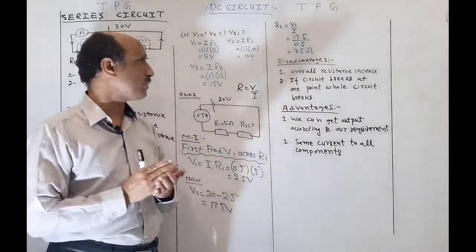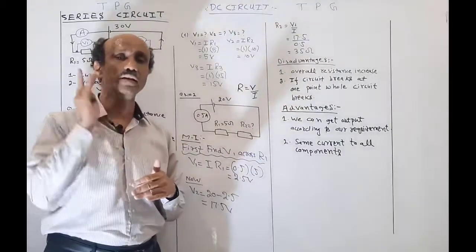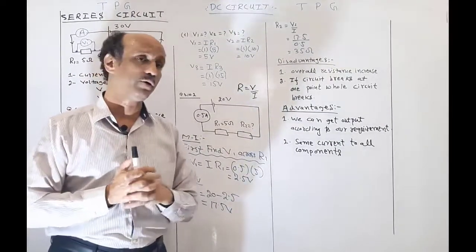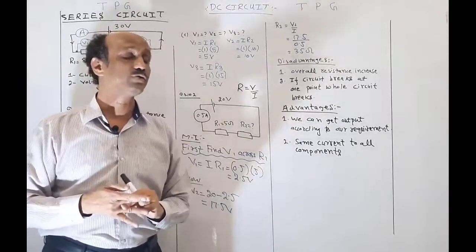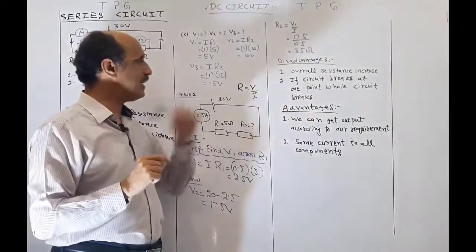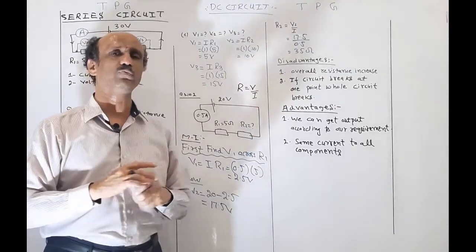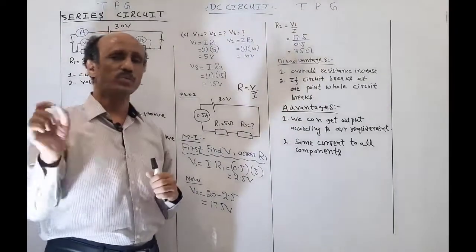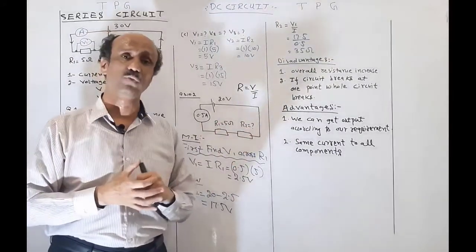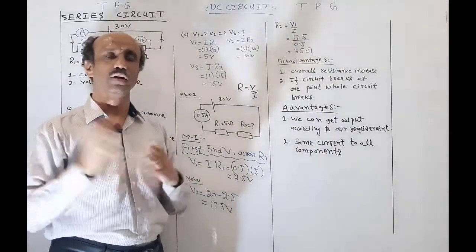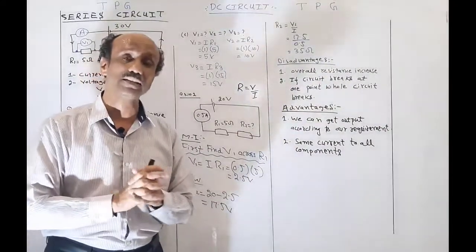The disadvantages of series combination: overall resistance increases, so current decreases. Also, if the circuit breaks at any one point, the whole circuit stops working because there is only one path for current flow. The advantage is that it acts as a voltage divider — for example, from a 30 V source you can obtain an output of 7.5 V by choosing resistances appropriately. The current remains the same to all components.